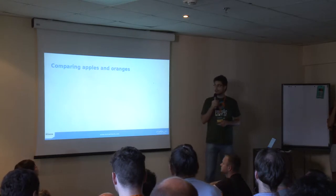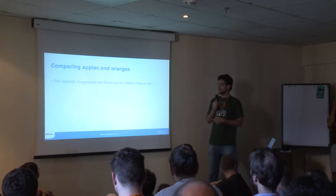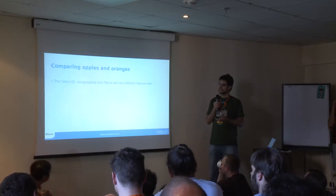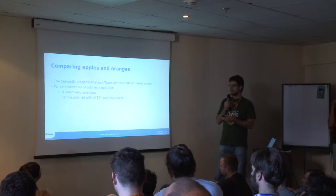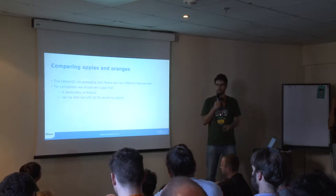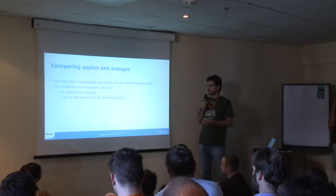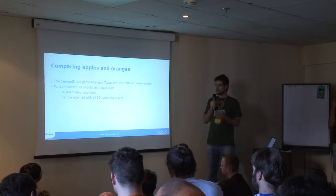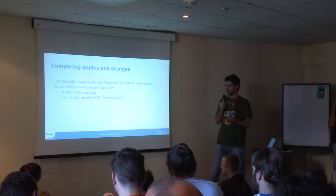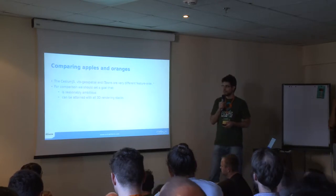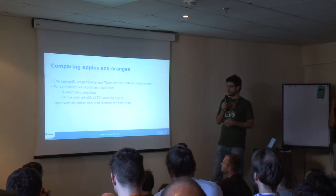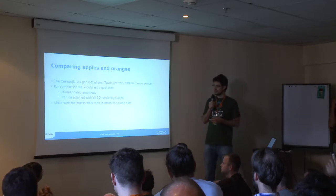How do we compare these 3D stacks? Because they are very different, at least feature-wise, we need to pick a test case. We want something reasonably ambitious — not just rendering a globe with an orthophoto, that would be a waste of time. On the other hand, we don't want to push it so far that only one stack can fulfill all requirements. We also want to make sure that all the stacks work with mostly the same data.